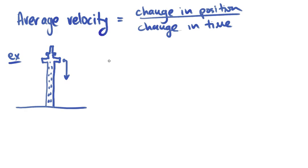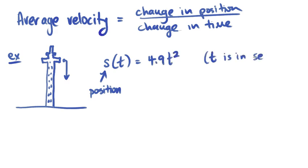And to know how far the ball has dropped from the tower, we can use a position function. A position function s is generally used for a position function, is equal to 4.9t squared, and t is in seconds. And the position function s is in meters.